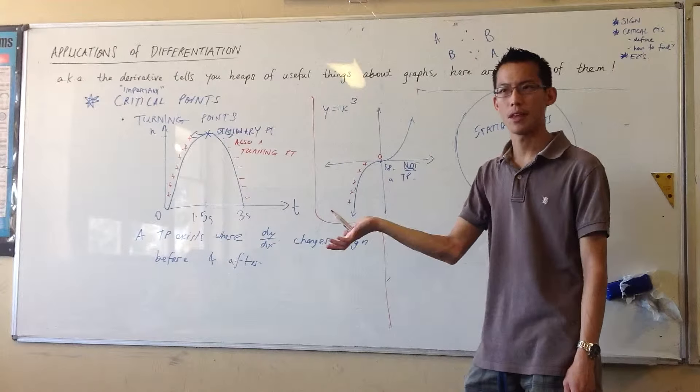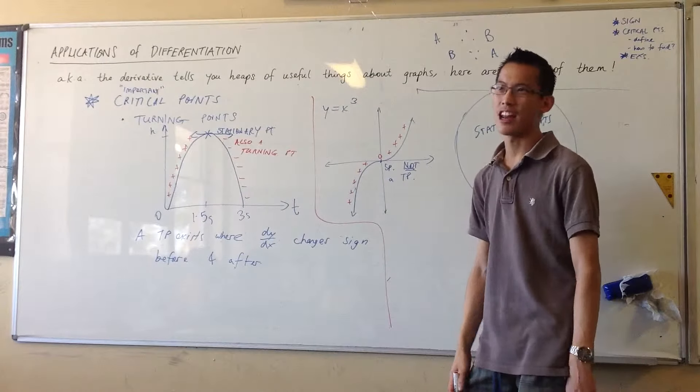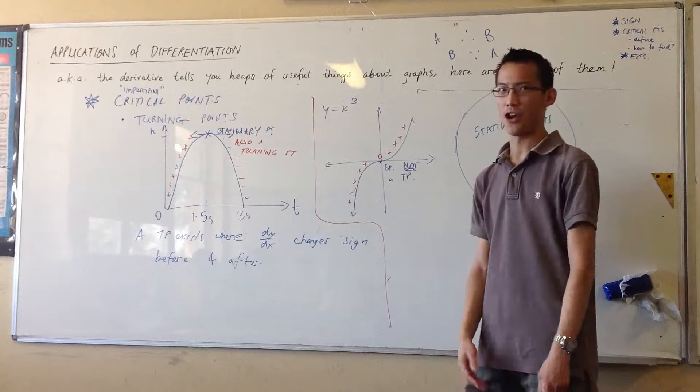Sorry, not negative, 0. But then after that, it stays positive. So you can see there's no change in sign. And I mean, far more intuitively, the graph just doesn't turn.